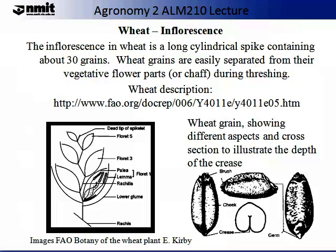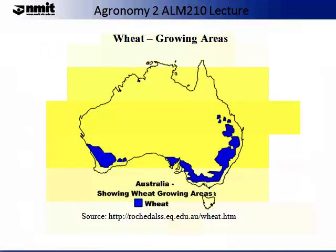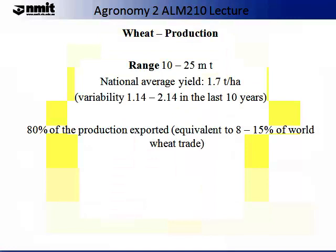Wheat grain is shown in images displaying different aspects of cross-section to illustrate the depth of the crease. Both of these images were drawn or modified by eKirby and are available on the FAO website. The following map of Australia shows in highlighted blue sections where wheat is sown and grown. Wheat production ranges from 10 to 25 million tonnes in Australia. The national average yield is 1.7 tonnes per hectare with a variability range from 1.14 to 2.14. 80% of wheat production in Australia is exported, equivalent to between 8 and 15% of the world's wheat trade.